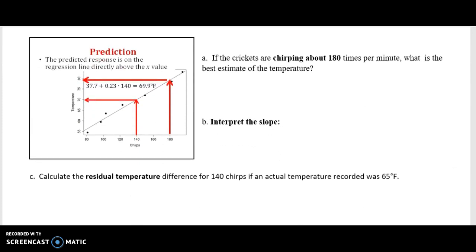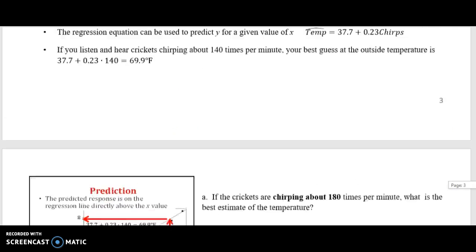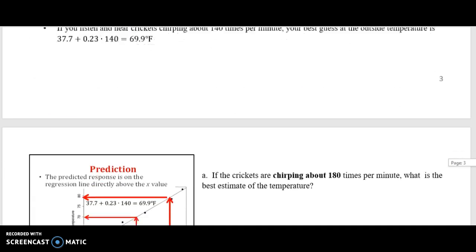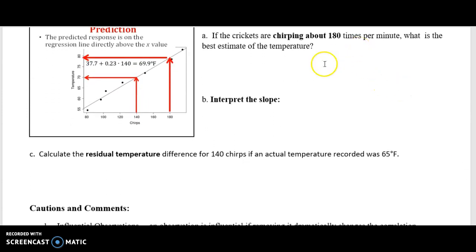Let's take an example that you can try. Now I'm posting all solutions for this, scan solutions for now. I'm leaving these blank for you to work on. If the crickets are chirping about 180 times per minute, 180 is here on the chirps, what is the best estimate of the temperature? So what we want to do is instead of putting in 140 like we did before, we're going to put in 180 for the number of chirps. I want you to try that. Put in 37.7 plus 0.23 times 180 and see what you get as the prediction for the temperature at 180 times per minute.